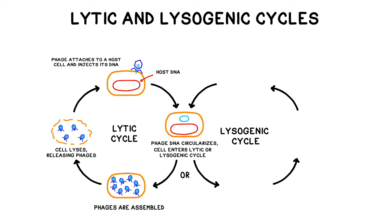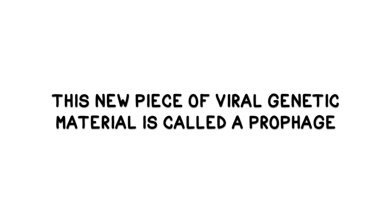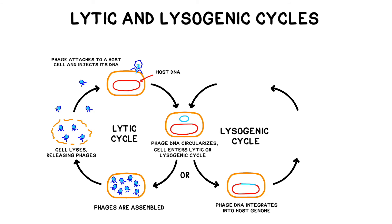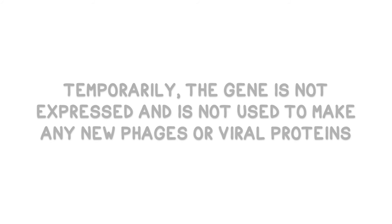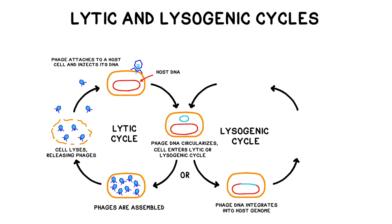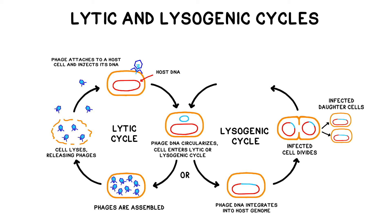Phages that reproduce only using the lytic cycle are called virulent phages. However, many viruses tend to reproduce using a combination of the lytic cycle and another strategy known as the lysogenic cycle. The lysogenic cycle involves the incorporation of viral nucleic acids into the host cell's genome. This new piece of viral genetic material is called a prophage. The process doesn't immediately kill the host — rather, the virus can quietly lie in wait until the ideal moment. The gene isn't expressed and does not code for new phages, so the infected organism can sometimes go years without showing any symptoms. Whenever the infected host cells divide by mitosis, their daughter cells will also include that chunk of viral genome — all of these infected cells will be ready to begin churning out viruses at a moment's notice, sort of like a viral sleeper cell. Under the right conditions, usually some sort of cellular stress, the viral genetic material is excised from the host's DNA, the cell begins to manufacture viruses, and then the cell finally lyses.